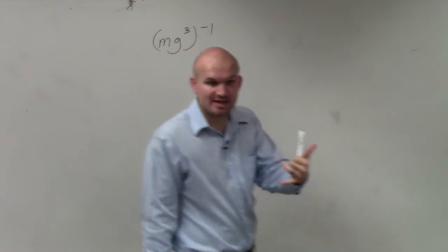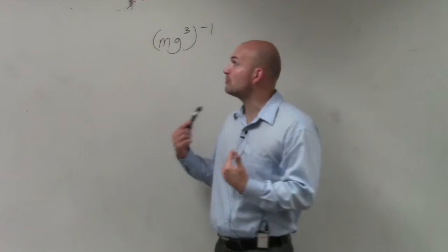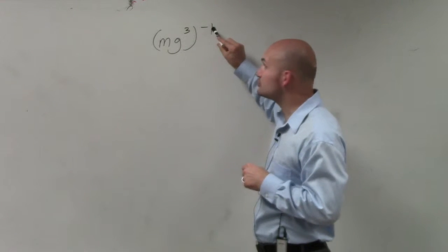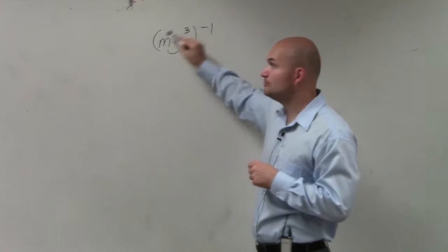Since they're separated by multiplication, we use what we call the power to product rule. That means I can distribute my power to both of my terms.